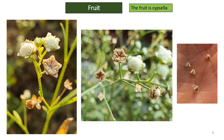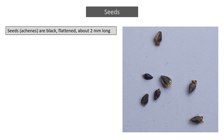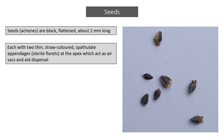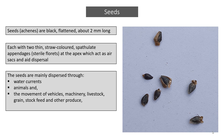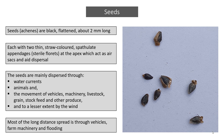The fruit is a cypsela. Seeds, or achenes, are black, flattened, and about two millimeters long, each with two thin straw-colored spatulate appendages or sterile florets at the apex, which act as air sacs and aid dispersal. Seeds are mainly dispersed through water currents, animals, and the movements of vehicles, machinery, livestock, grain stock feed, and other produce, and to a lesser extent by wind. Most long-distance spread is through vehicles, farm machinery, and flooding.